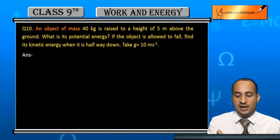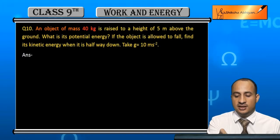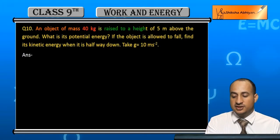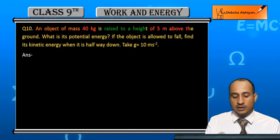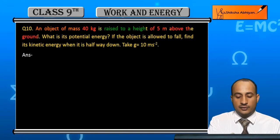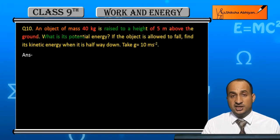An object of mass 40 kg is raised to a height of 5 m above the ground. What is its potential energy?